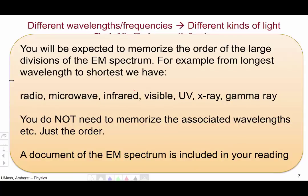Note, you will be expected to memorize the order of the large divisions of the electromagnetic spectrum. For example, from longest wavelength to shortest, we have radio, microwave, infrared, visible, UV, X-ray, gamma ray. You do not need to memorize the associated wavelengths, or frequencies, or temperatures, or any of that stuff. Just the order. Y'all know that I'm not a big proponent of encouraging memorization. However, as science majors, I feel that you should know this basic order of the different parts of light. A document with all of these details of the different kinds of light to help you with your memorization is included in your reading.